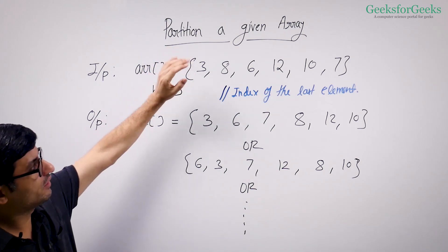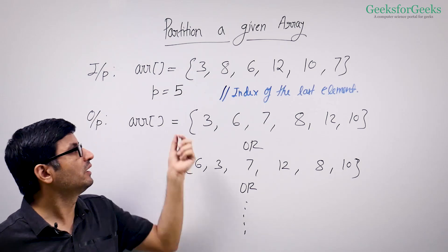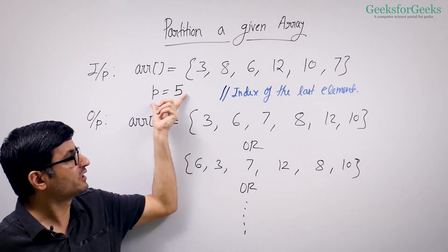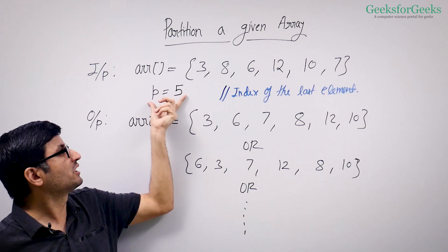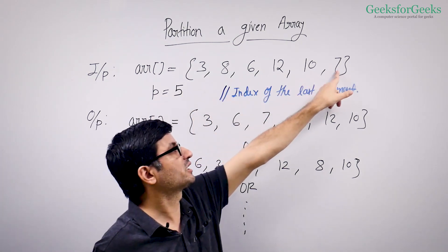So we are given an array, an unsorted array obviously, and we are given the index of an element inside this array. So I am given this index p as 5, which is the index of the last element 7.